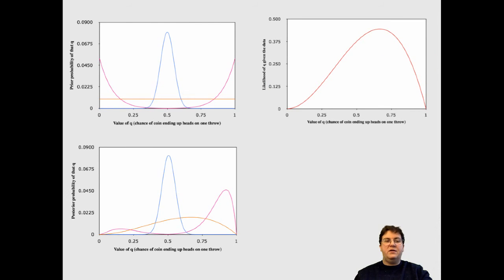And so here, this shows the same plots again. Upper left is the prior, to the right is the likelihood, and below is the posterior.